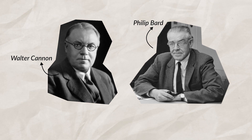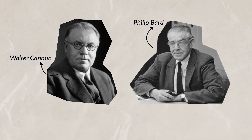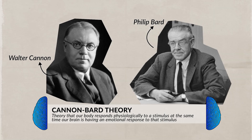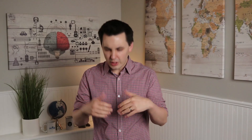Walter Cannon and Philip Bard disagreed with James and Lange, and they created the Cannon-Bard Theory, which believed that our body's response to a stimulus and our emotions were separate but happened simultaneously. We experience a physiological response and an emotional response roughly at the same time. For example, when you get jump scared, your sympathetic nervous system causes your heart to start pounding, and at the same time the information is sent to your brain, causing you to be aware of your fear.